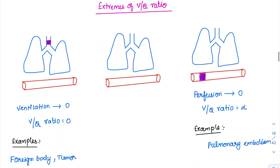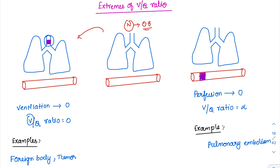Now let's talk about the extremes of V/Q ratio. If ventilation is completely absent — ventilation is 0 — what happens to the V/Q ratio? Since ventilation is the numerator, if it becomes 0, obviously the ratio is going to become 0.